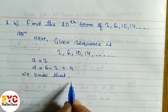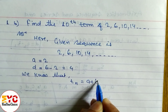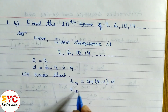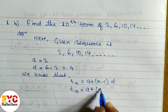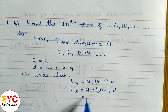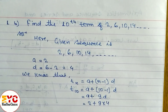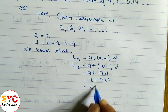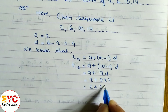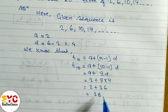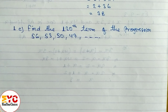We know the formula: Tn = a + (n−1)d. We need to find the 10th term, so n = 10. Therefore: T10 = a + 9d = 2 + 9 × 4 = 2 + 36 = 38. So the 10th term of this sequence is 38.